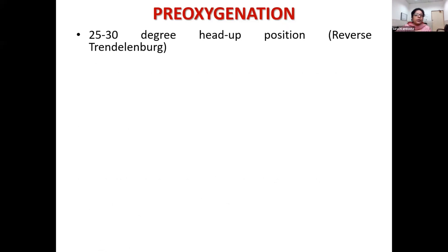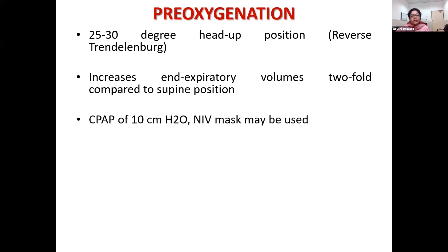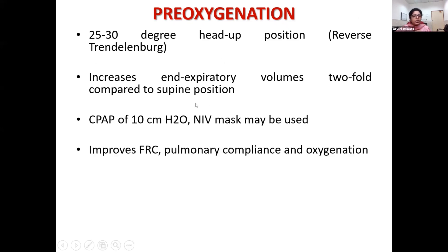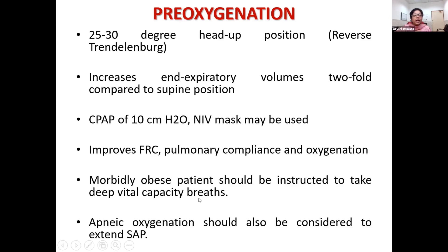For pre-oxygenation, a 25 to 30 degree head-up position — proper reverse Trendelenburg with head-up and feet down — is always advised. This increases end-expiratory volume approximately two-fold compared to the supine position. A CPAP of 10 cmH₂O during pre-oxygenation using an NIV mask can improve functional residual capacity, which is already reduced in these patients, increasing the safe apnea period and improving pulmonary compliance and oxygenation. Morbidly obese patients should be instructed to take deep vital-capacity breaths, and apneic oxygenation should be considered to extend the safe apnea period.